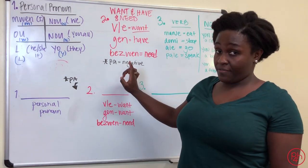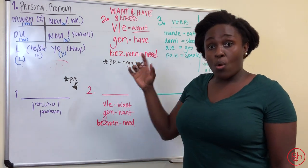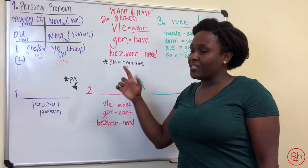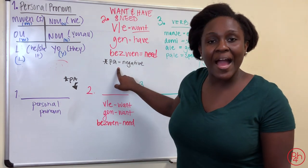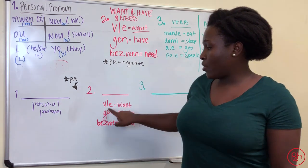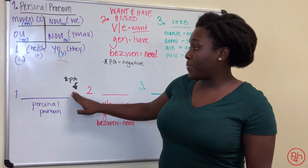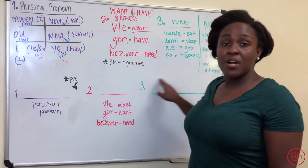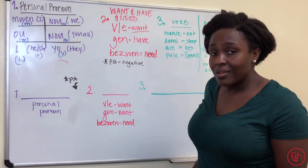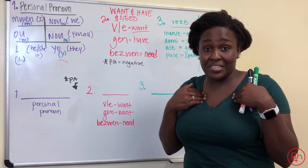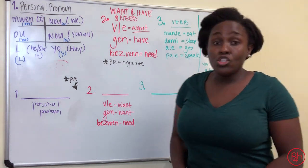If you want to make it negative, like you're saying you don't want or you don't have or you don't need, all you have to do is put pa, P-A, pa in front of whether you want, have or need. So I could say, Mwen pa vle manger. Mwen pa vle manger. I don't want to eat.